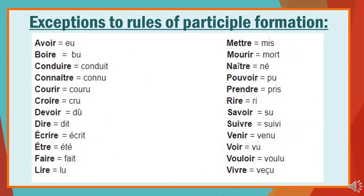As with any language and any tense, there are always exceptions. You need to know these exceptions to participle formation, which do not follow the three rules given previously. Let's go through them quickly with their meanings: avoir (to have) becomes eu.